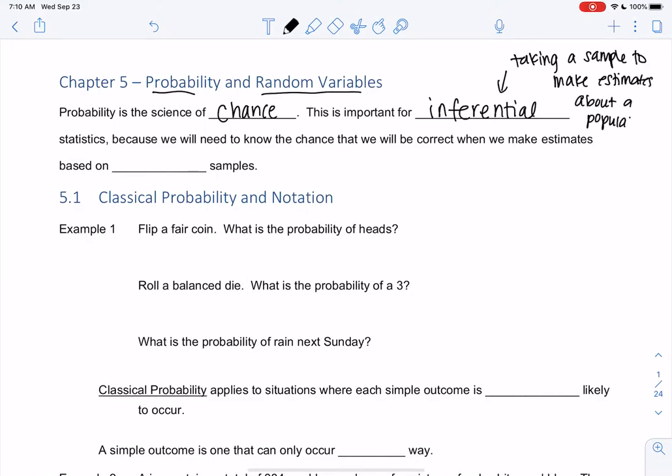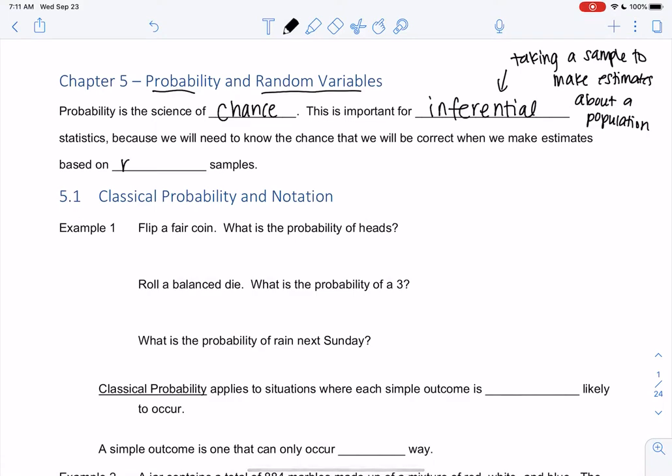Maybe we've taken an average of a sample, but we haven't really made a conclusion about a population yet. The reason this is important for inferential statistics is because we need to know the chance that we will be correct when we make estimates based on random samples. Even when we have a sample, we're not 100% correct because we don't know the population. So we want to figure out how likely is this true. This is why we're going to learn probability, and then we'll figure out what this is.